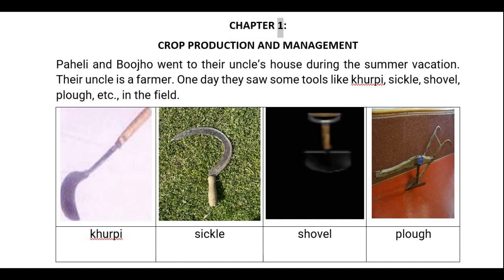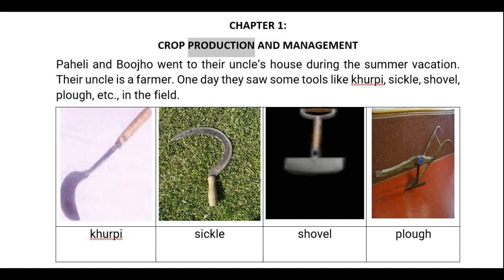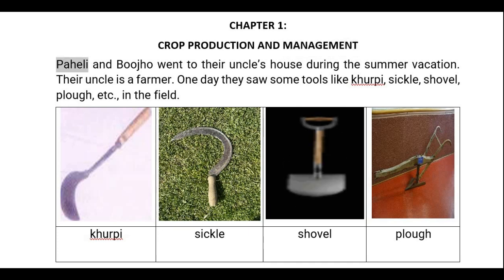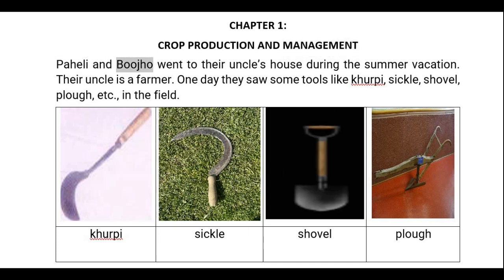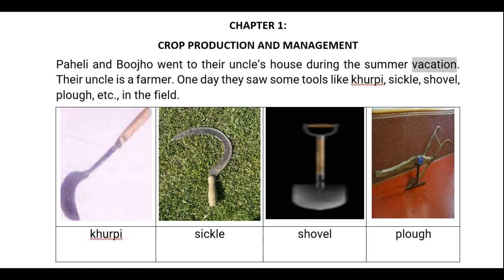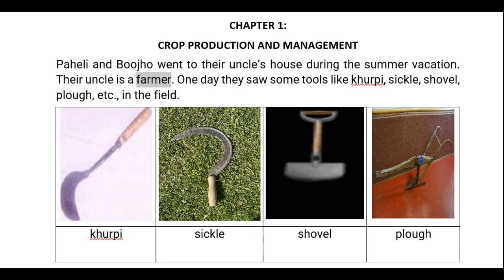Chapter 1: Crop Production and Management. Paheli and Buhdo went to their uncle's house during the summer vacation. Their uncle is a farmer.